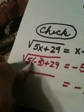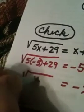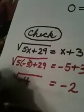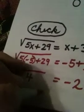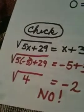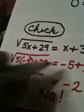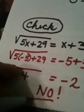Negative 25 plus 29 is 4. Is the square root of 4 equal to negative 2? No, it is not. So when I put in the number negative 5, it did not work.